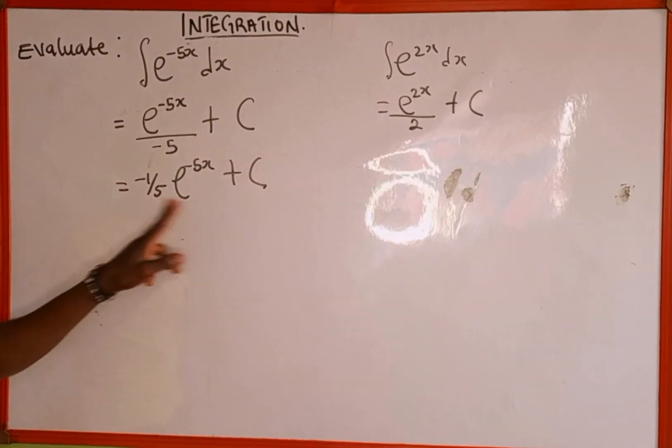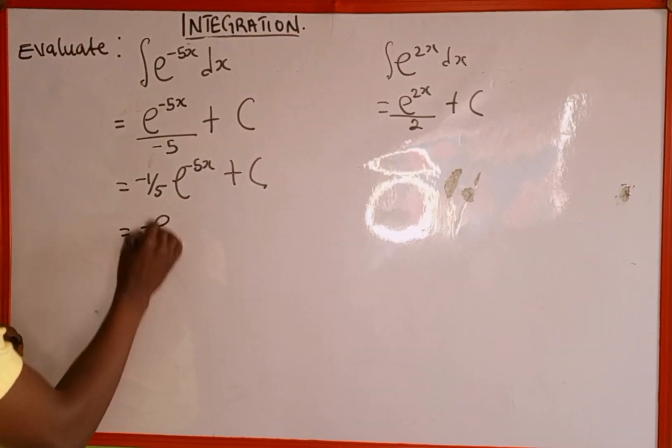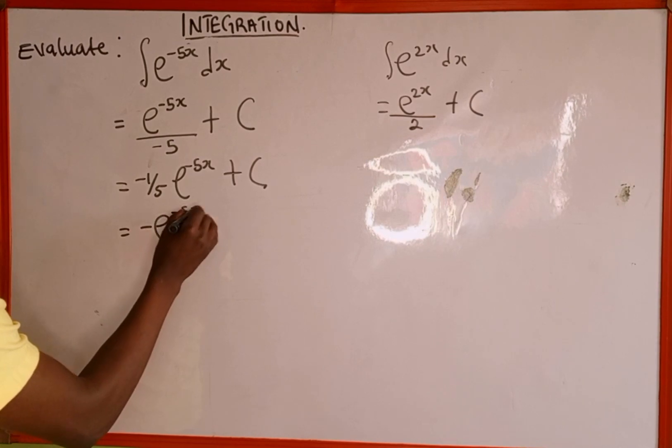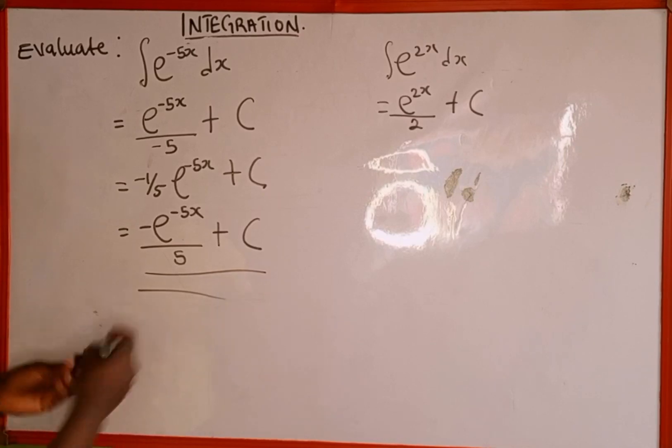Multiplying, we get -e^(-5x)/5 plus C. So as simple as this.